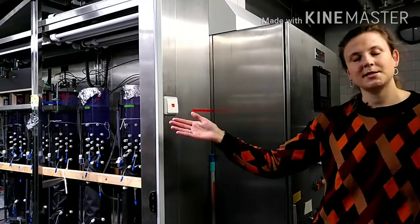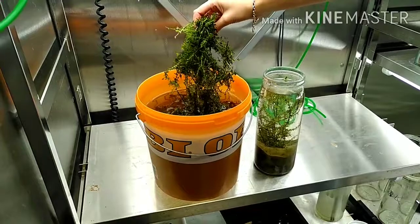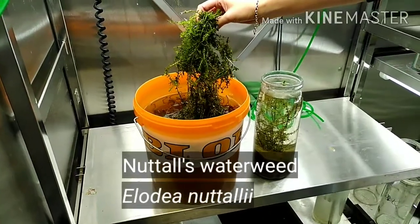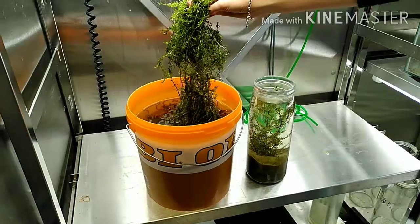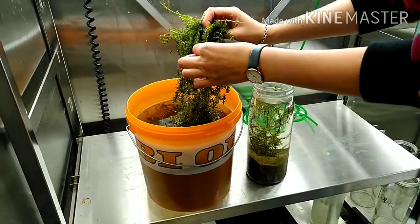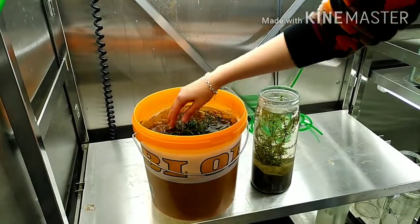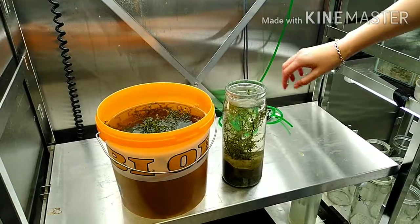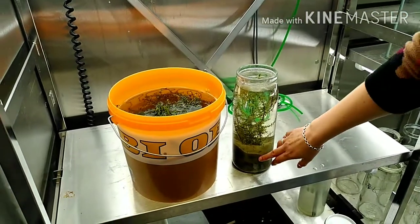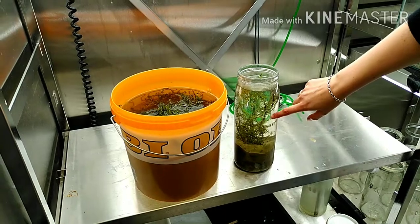This is Elodea nuttallii, or Nuttall's waterweed, which we collected from a lake. And you can see here, it already starts to root. And it's kept in water. And the plants for my experiment are already planted. So we have a bit of sediment from the lake and some of the shoots in there.